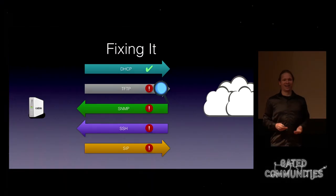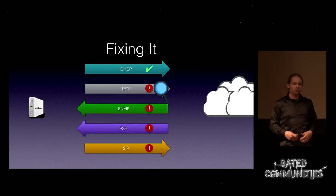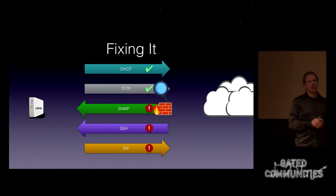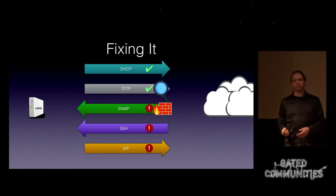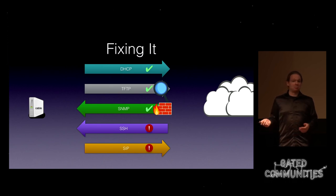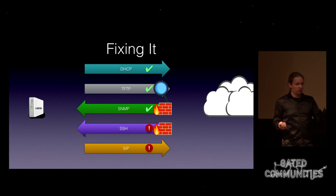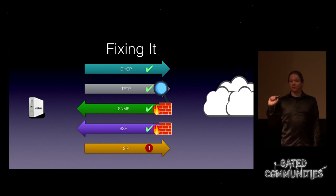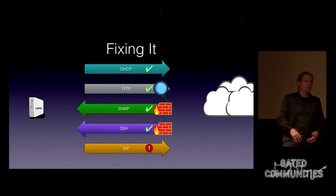The first thing they did: they added a check to their TFTP server to verify whether you're actually eligible to download a provisioning file — so now you can only download your own. Then they went ahead and said there's no real reason why one modem should do SNMP traffic with another, so they added a firewall blocking SNMP traffic between different machines. The same for SSH — they added a firewall blocking TCP between one modem and another. And because the VoIP access credentials are part of your provisioning file, which you can no longer download from somebody else, that one's fixed too.